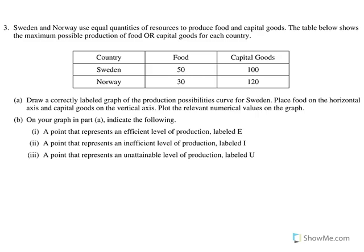We've got two countries — Sweden and Norway — and they're using equal quantities of resources to produce food and capital goods. The first thing I'm going to note is that this is definitely an output problem, because we're using an equal number of resources.